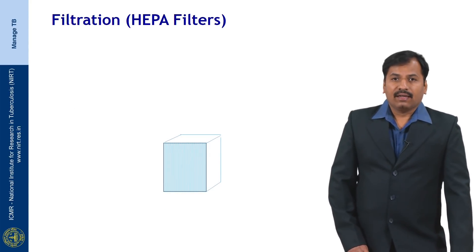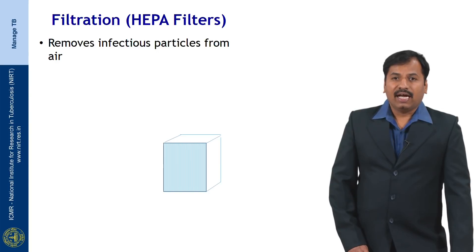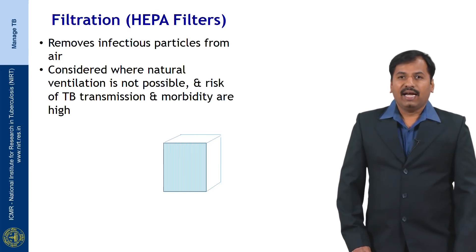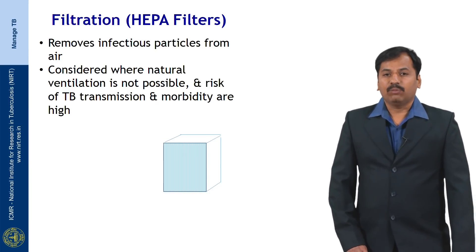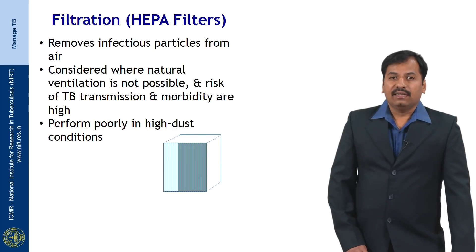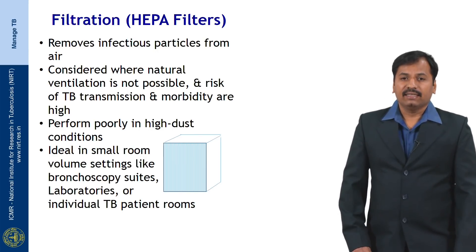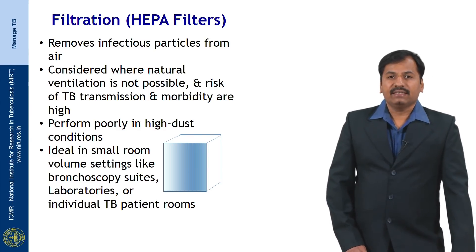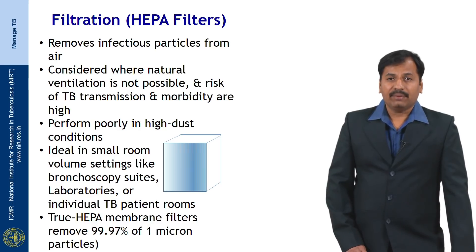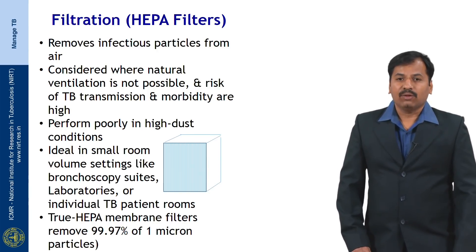HEPA filter is a kind of high efficiency particulate air filter. It removes infectious particles from air and is considered where natural ventilation is not possible and risk of TB transmission and morbidity are high. It is not advisable in high dust conditions but is ideal in small room settings like bronchoscopy suites, laboratories and individual TB patient rooms. True HEPA filters remove 99.97 percent of particles less than 1 micron in size.